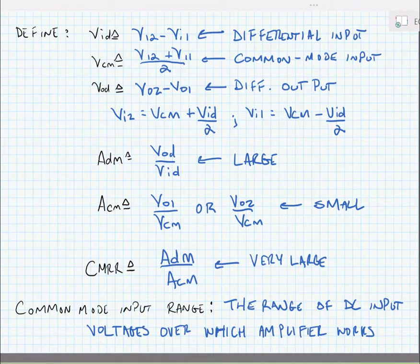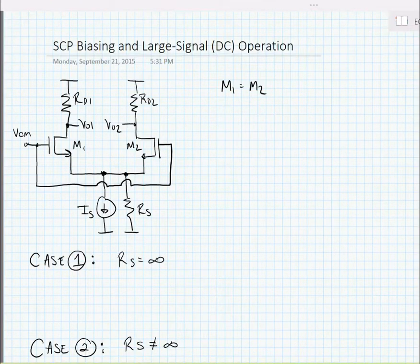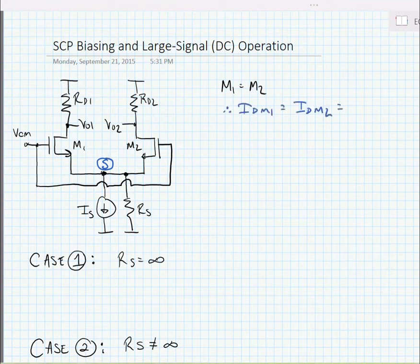Now let's look at the large signal operation of this differential pair. Here we have our differential pair again, and we're going to be paying special attention to the source terminal between the two transistors. Here we're saying that everything is symmetric, so M1 is equal to M2. In other words, the currents going through M1 and M2 are equal. So if the currents are equal, it's just the average value of the source current IS going through each branch of the two transistors.